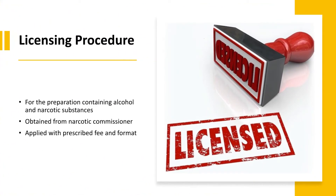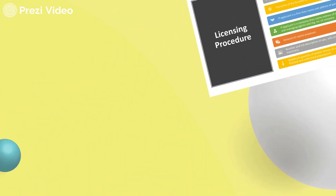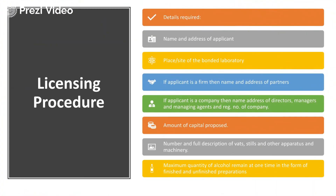The license to manufacture either through in-bond or outside-bond must be properly obtained. For preparations containing alcohol or other narcotic substances, manufacturers must obtain permission from the Narcotic Commissioner by submitting a proper application with the prescribed fees and format.